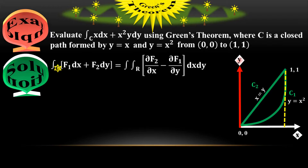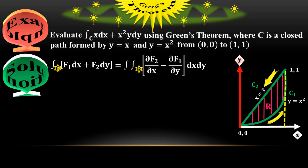Line integration takes place in the anti-clockwise direction — first C₁ and then C₂. On the right side, R stands for the region under the curve. The green boundary shown in the diagram represents the left side (line integration), and the region enclosed by that green boundary represents R, the right side of the equation.